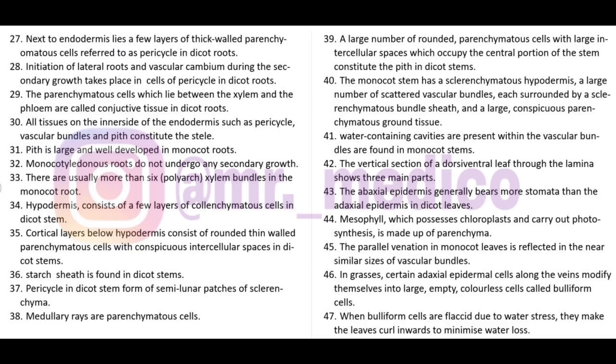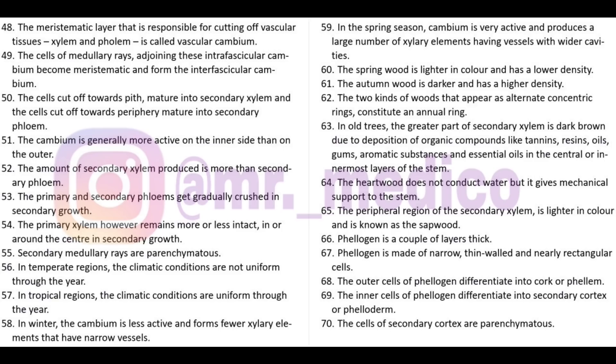Bulliform cells are also called motor cells. They are empty and colorless. When bulliform cells are flaccid due to water stress, they make the leaf curl inward to minimize water loss. When they are turgid, the grass remains open/flat.